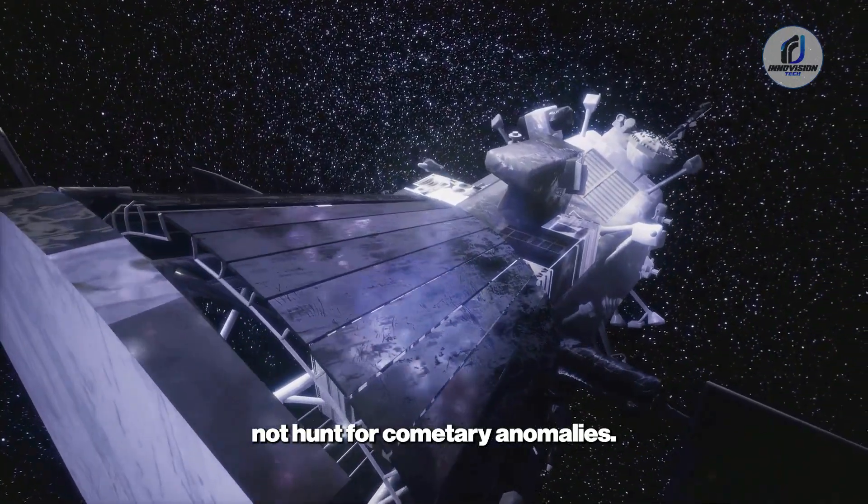During this period, our only eyes on the comet belong to a handful of space-based instruments. The Soho Observatory's coronagraph can spot large-scale outbursts, while the Parker Solar Probe might record changes in brightness. But honestly, the data will be patchy and delayed. As Noor E. Rawafi, the project scientist for Parker Solar Probe, knows well, these instruments are designed to study the sun, not hunt for cometary anomalies. This period of perihelion blindness is the perfect time for something extraordinary to happen, unseen by human eyes.